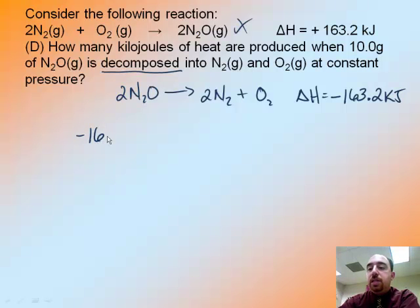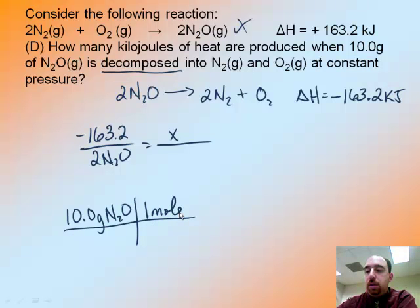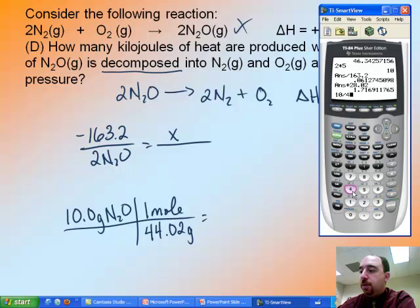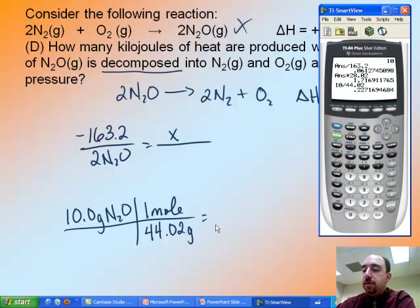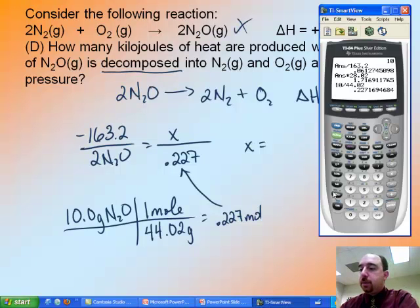So now, the process is exactly the same. Negative 163.2. It's talking about N2O. So I put 2 N2O. Is equal to how many kilojoules of heat? X. Over, and that says 10 grams. So I've got to convert my 10 grams of N2O. 44.02 grams, that goes back to that part B that I just pulled that from. 10 divided by 44.02 is 0.227. So that comes up in here. Cross multiply and solve.